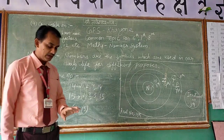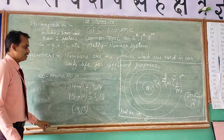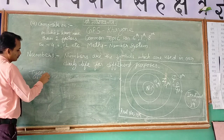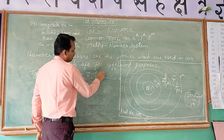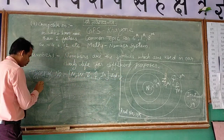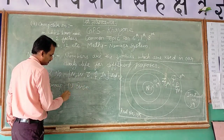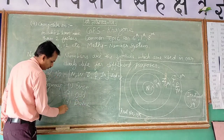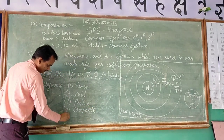Once again, I am going to revise types of numbers: natural number, whole number, integer, rational number, irrational number — this group is known as real numbers. Then subgroups: first, even numbers; second, odd numbers; third, prime numbers; fourth, composite numbers; fifth, co-prime numbers. I hope you remember all these things.